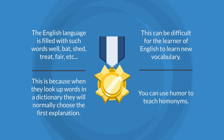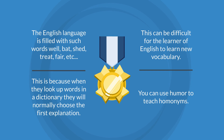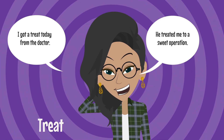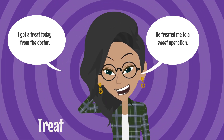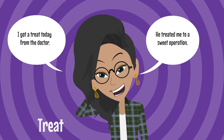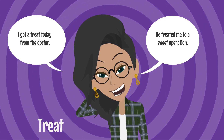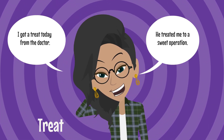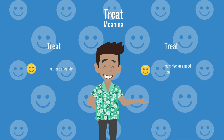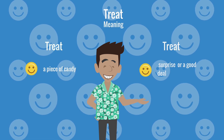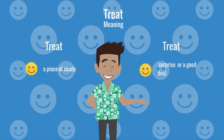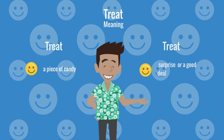This can be difficult for learners of English because when they look up words in a dictionary, they will normally choose the first explanation. You can use humor to teach homonyms. One example would be the word 'treat': I got a treat today from the doctor — he treated me to a sweet operation. The word 'treat' has two meanings: a piece of candy, or a surprise.